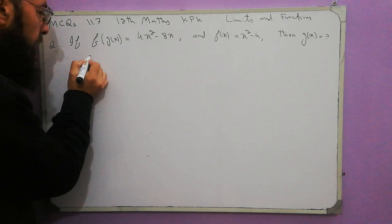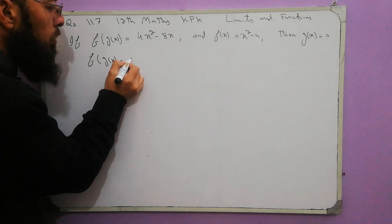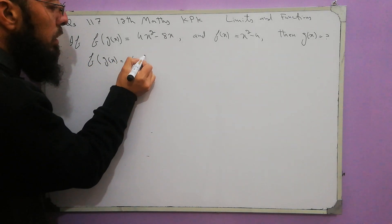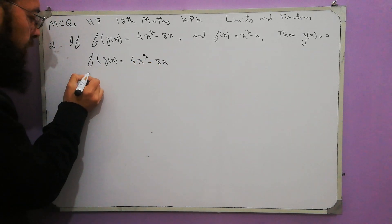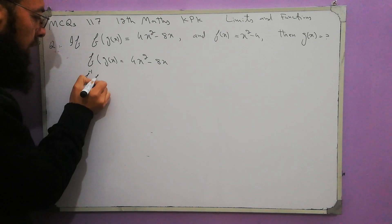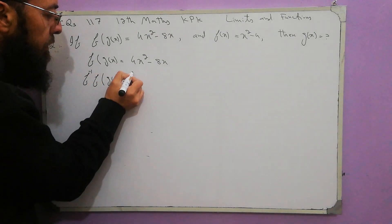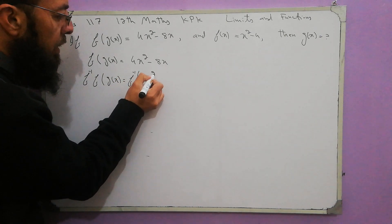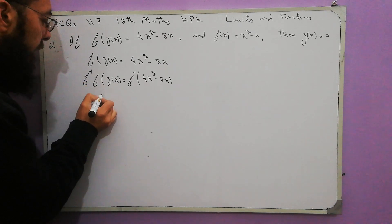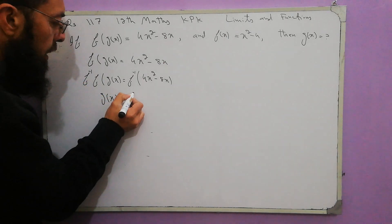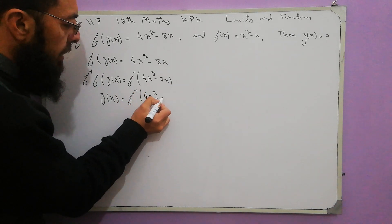We know that f of g of x is equal to 4x squared minus 8x. Take f-inverse of both sides. f-inverse of f of g of x is equal to f-inverse of 4x squared minus 8x. f-inverse and f will be cancelled, so g of x is equal to f-inverse of 4x squared minus 8x.